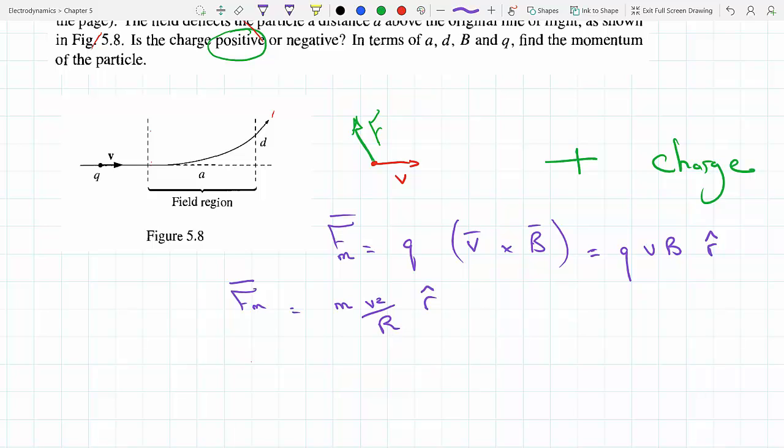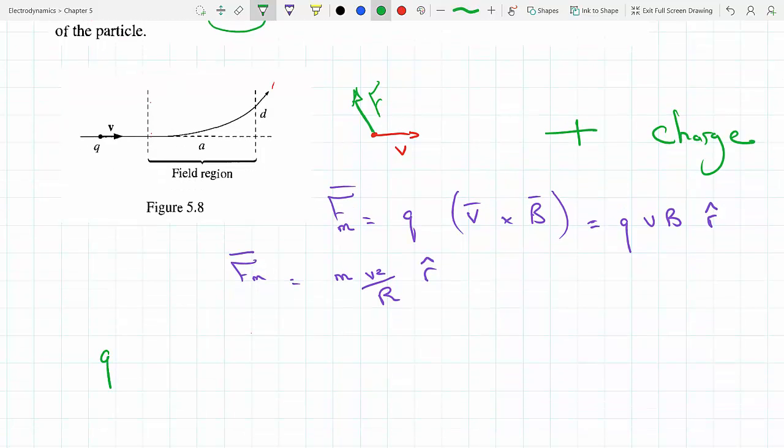Technically it's negative r hat depending on where you put your origin, but nonetheless, we know that the magnitudes of these two forces will be the same. So qvB has to equal mv²/r with r being the radius of the trajectory, and we know that the momentum is mv, classical, because the radial acceleration is v²/r.